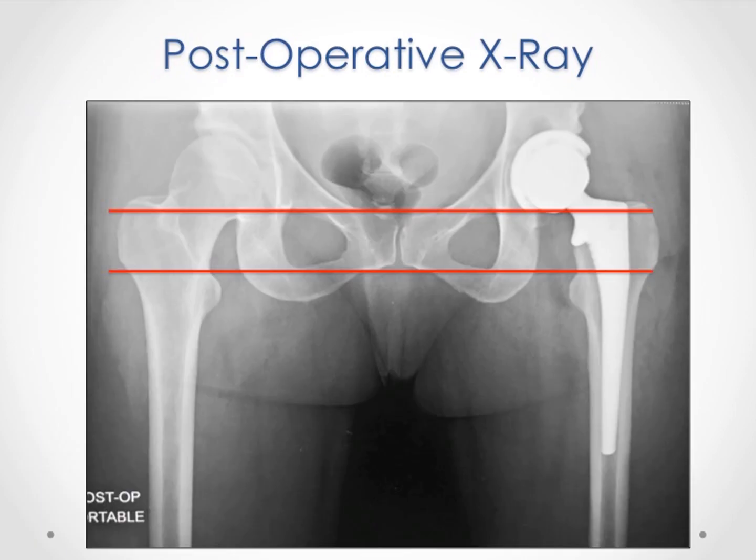Once we have determined that the leg length and offset are accurate, the hip is then clinically tested for stability through a range of motion. Once we are satisfied with the precision of our results, the trial stem and head are removed and the real implants are impacted into position. We get a final check postoperatively with the recovery room radiographs. These postoperative radiographs are used to double check and confirm our templating and intraoperative determination of leg length and offset. In this radiograph, we will see parallel lines between the teardrop line and the top of the lesser trochanter line, as we had seen at the time of surgery.